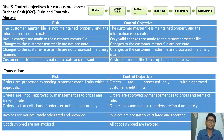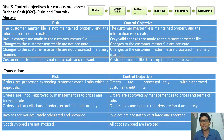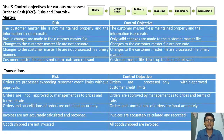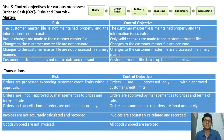Further O2C master risks: changes to the customer master file not processed in a timely manner — control objective: should be processed timely; customer master file data not up to date and relevant — control objective: must be up to date and relevant. These are the five risks and control objectives under O2C masters.